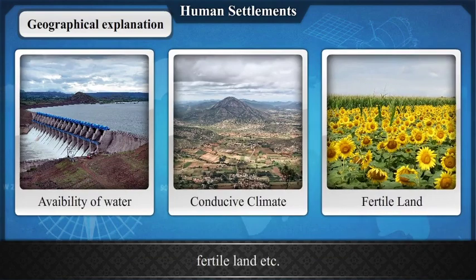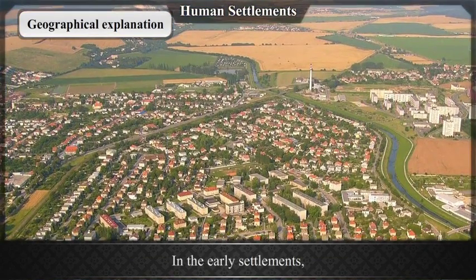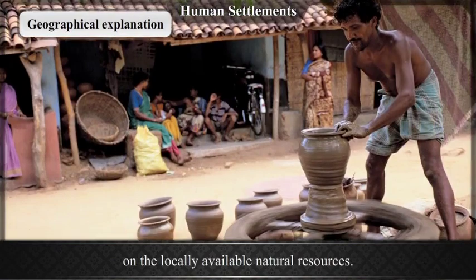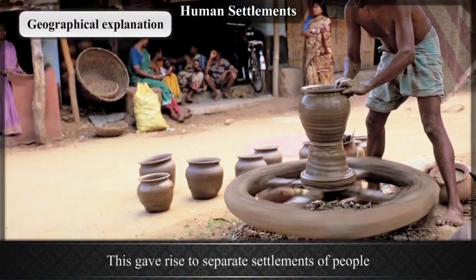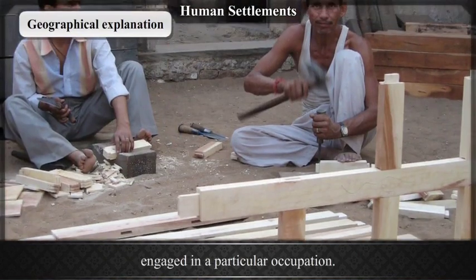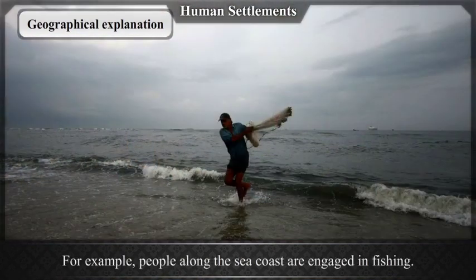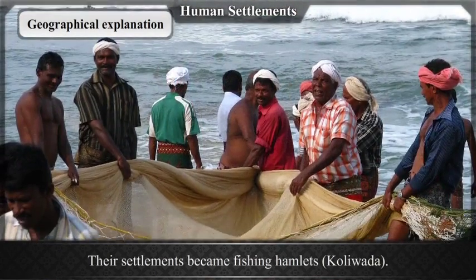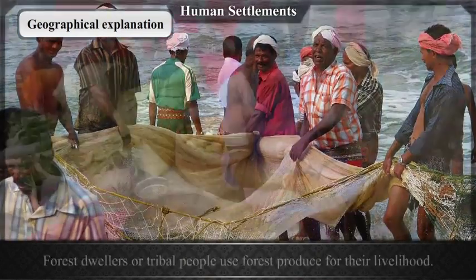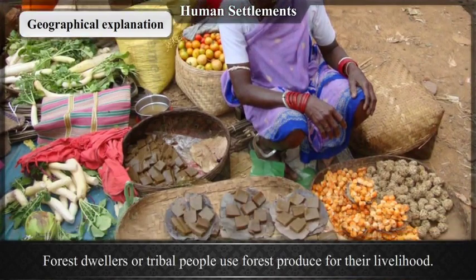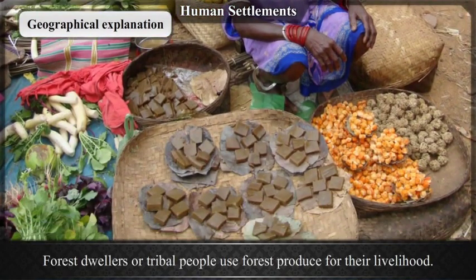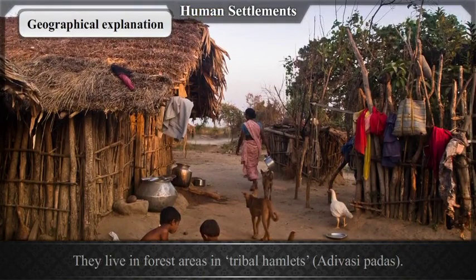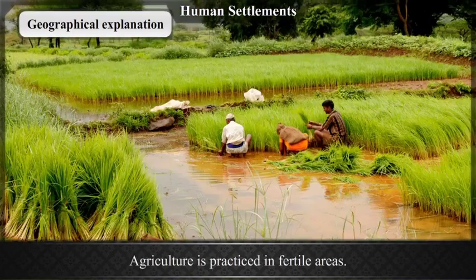In early settlements, the occupations of people were dependent on locally available natural resources. This gave rise to separate settlements of people engaged in a particular occupation. For example, people along the sea coast are engaged in fishing, and their settlements became fishing hamlets like Koliwara.